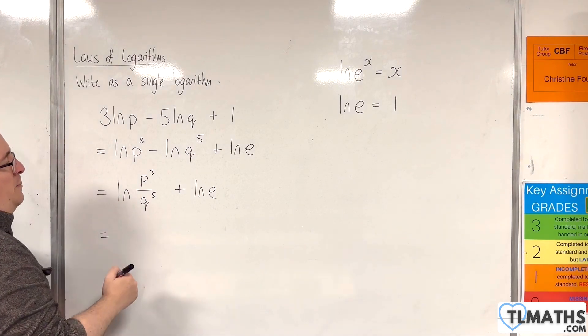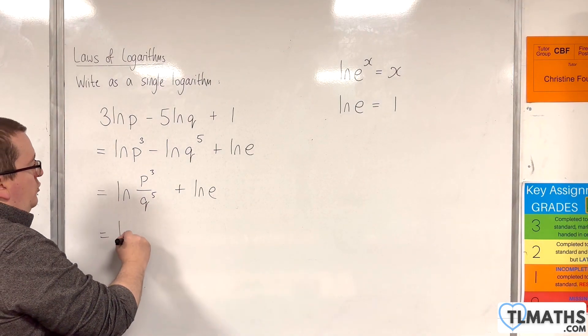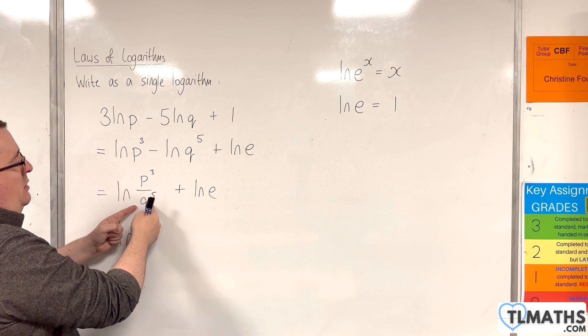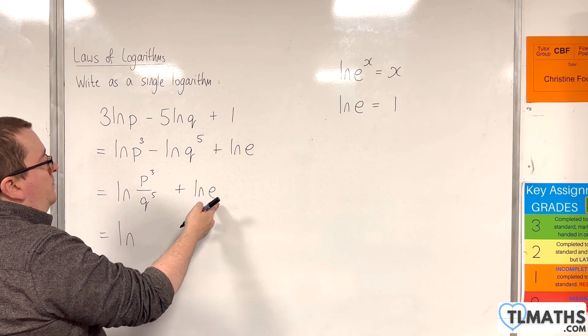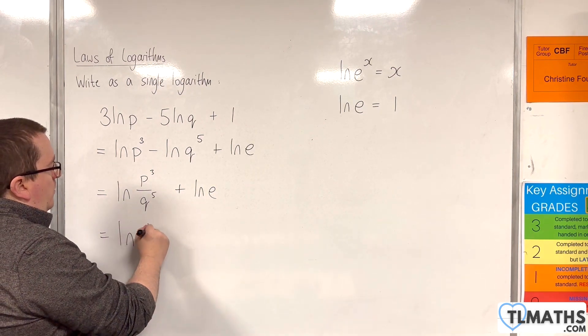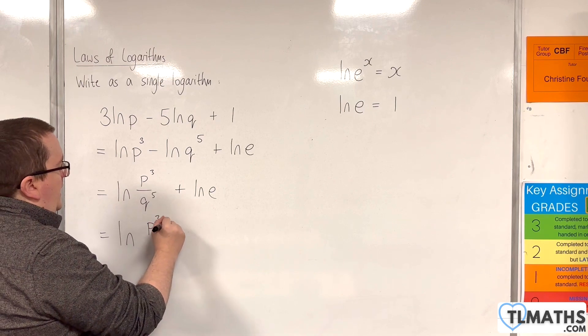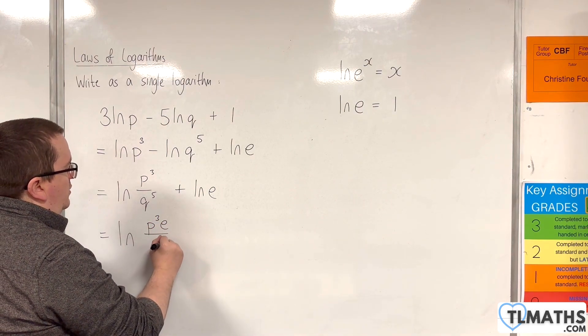So now use the power rule, and we're going to have the natural log of p cubed over q to the 5 times by e. So p cubed e over q to the 5.